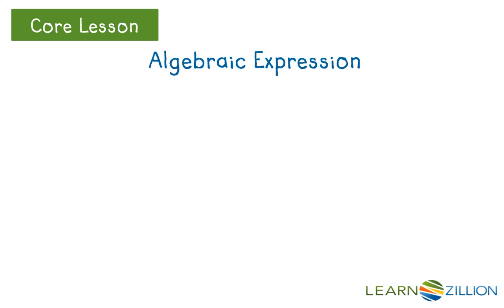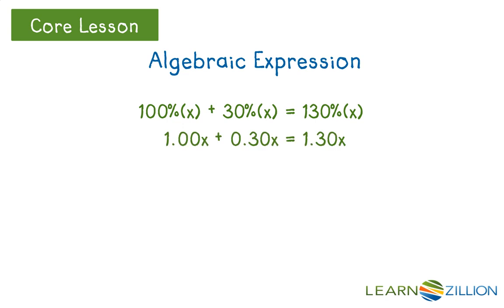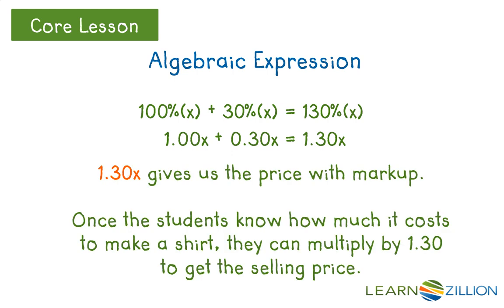The 7th grade class could write an algebraic expression to figure out their total price per shirt after markup. First they are going to pay 100 percent of X, written as 1.00X or just X. Then they add 30 percent of X as their markup, shown as 0.30X. Their total cost would be 130 percent of X, written as 1.30X. Once the students know how much it costs to make a shirt, they can multiply by 1.30 to get their selling price.